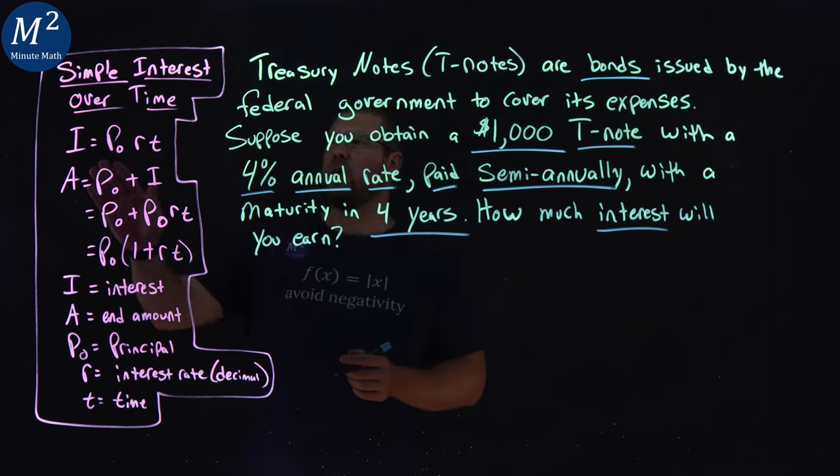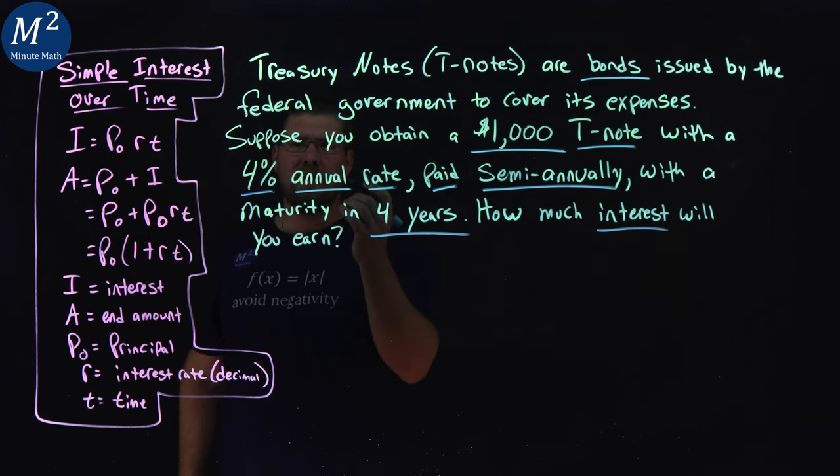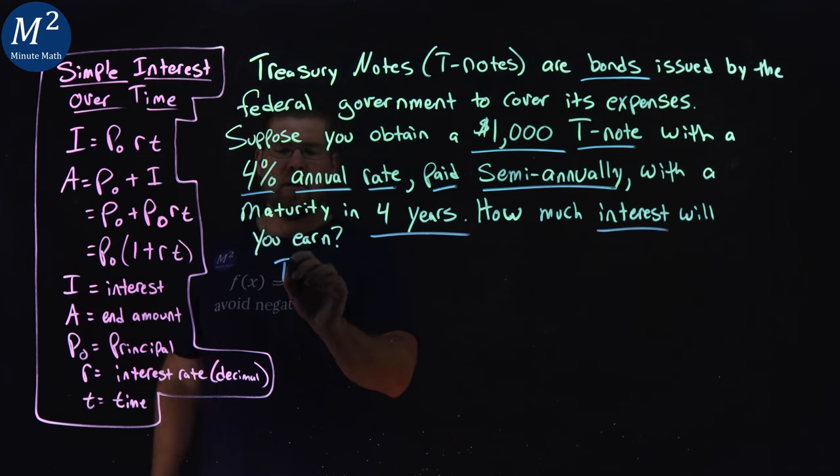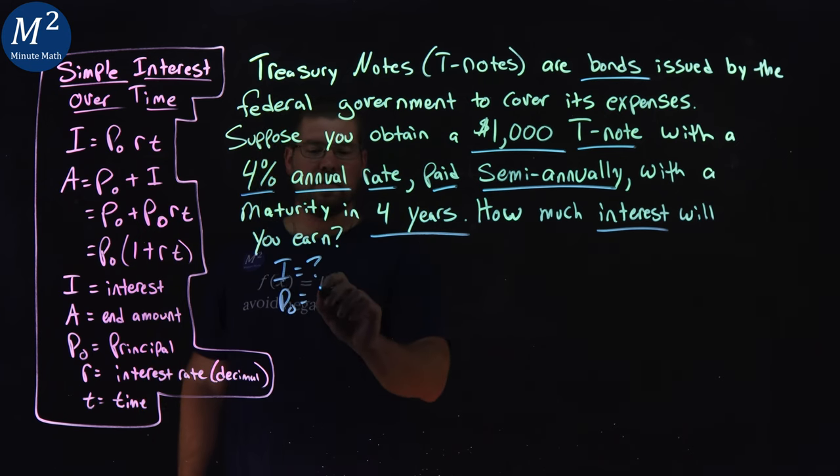We want to use our interest formula here. Let's get our parts. Our I, our interest, that's what we want to find out. Our initial amount, pretty easy, is $1,000.